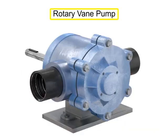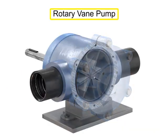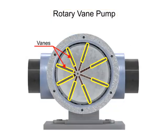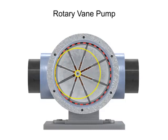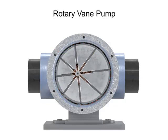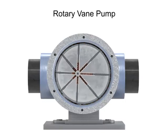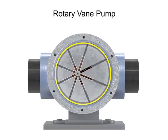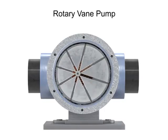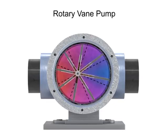A rotary vane pump is a positive displacement pump that consists of vanes mounted to a rotor. The vanes are on an off-center drive shaft. As the shaft rotates, the variable length vanes slide in and out to maintain contact with the pump housing. The tension in the vanes is maintained by either springs or hydraulic pressure. As the vanes rotate, they create chambers of varying sizes within the pump.